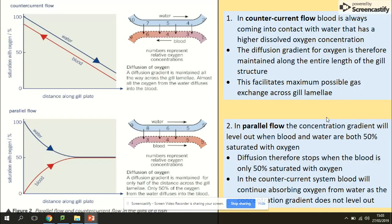To summarize, we have two pictures — counter-current flow and parallel flow. Counter-current flow is much more efficient because it maintains the diffusion gradient for the whole length of the gill, while the diffusion gradient is only maintained for half the distance across the gill lamella in parallel flow. That's the main adaptation — make sure you know it.